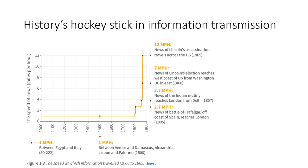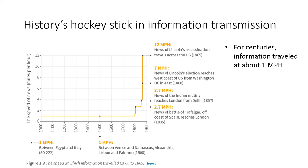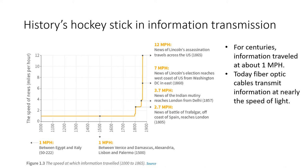We see the same thing in the speed of information transmission. For centuries, information moved at roughly the speed of walking — about one mile per hour. Then rapidly in the 19th century we got faster and faster at moving information. Lincoln's assassination in 1865 moved to the west coast of the United States at an average speed of 12 miles per hour — a combination of telegraph cable and some distances still covered by Pony Express. Today, fiber optic cables transmit information at nearly the speed of light.